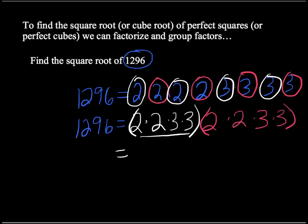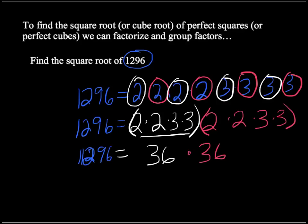In white here, I've got 2 times 2 times 3 times 3, and that's 36. And in red, I've got 2 times 2 times 3 times 3, which is, of course, also 36. So we could say that 1,296 is equal to 36 times 36, and therefore the square root of 1,296 is 36.